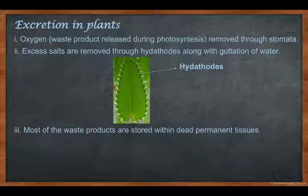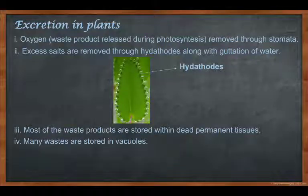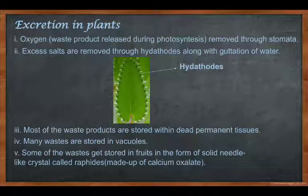Most of the waste products are stored in the dead permanent tissue. In class 9 we know there is dead permanent tissue present on the surface of the stem of a plant, commonly called bark, cork, or phellum. That dead permanent tissue is made up of all the waste materials which are excreted by the plant. Many waste products are also stored in vacuoles. Some waste products get stored on the fruit — there is a white-colored layer or spots present on the fruit.